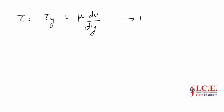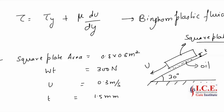Here is the equation of Bingham plastic fluids. Now let's take a problem: a square plate is coming down through an inclined plane, with oil in between for lubrication. The thickness of the oil film is 1.5 mm, the uniform velocity is 0.3 meter per second, the weight of the plate is 300 Newton, and the area of the square plate is 0.8 by 0.8 meter square. Let's try to solve this problem.